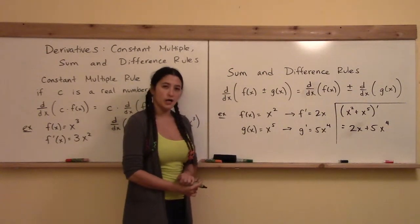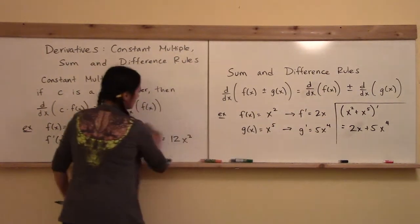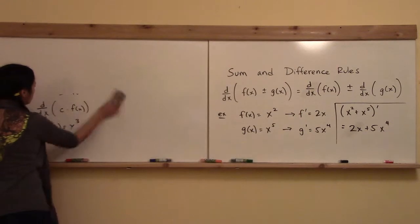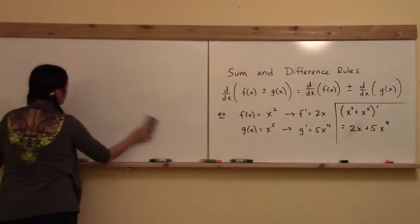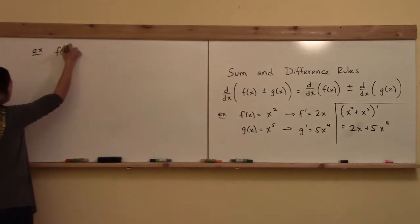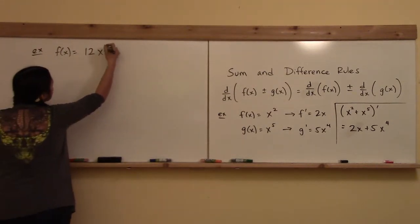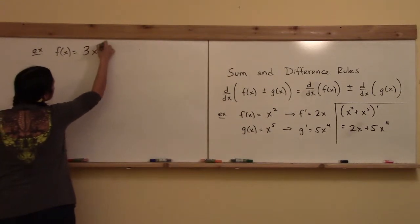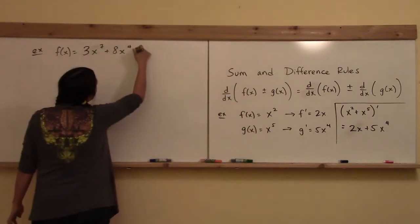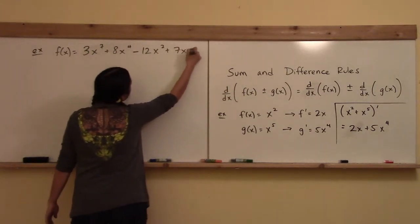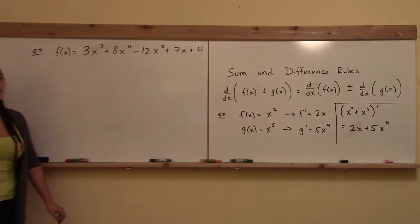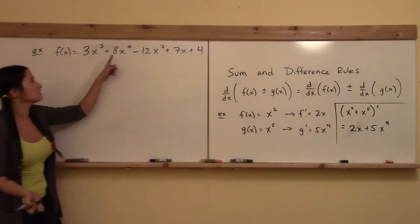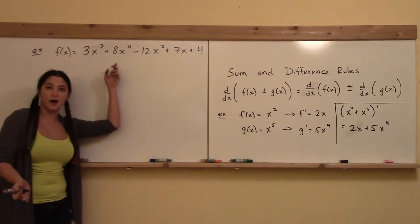Now let's take a look at how these constant multiple, sum, and difference rules work when we're trying to take the derivative of a very long function. It's not so much complicated as it's just going to be a long function. Let's say I give you a big fat polynomial. For example, let's say f(x) equals 3x⁷ plus 8x⁴ minus 12x² plus 7x plus 4. That's a big one.